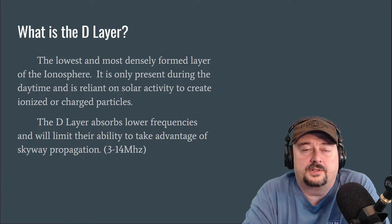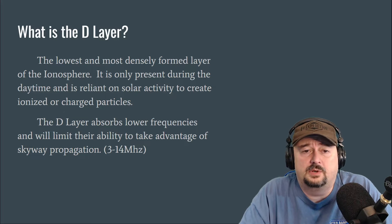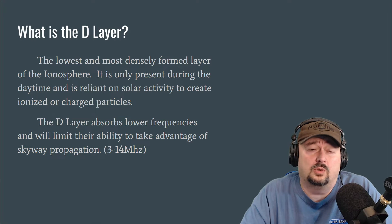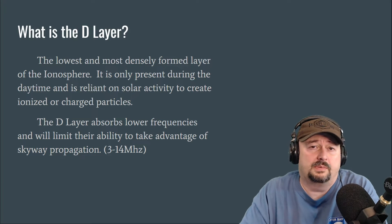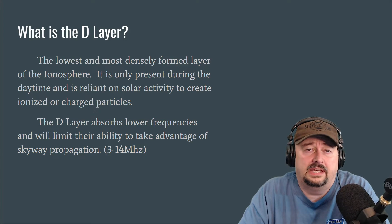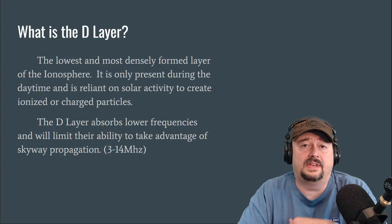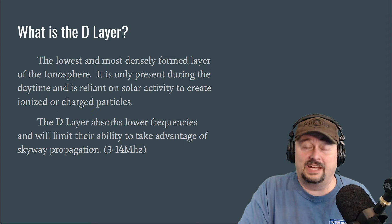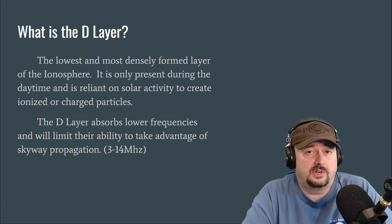The first thing somebody might ask is: what is the D-layer? It is the lowest and most densely formed layer of the ionosphere. It's only present during the daytime and is really reliant on solar activity to create ionized or charged particles. It's called the D-layer because they didn't want to call it A, B, or C in the event that the folks who discovered it would find another layer. So they started with D and worked their way up — just a little interesting tidbit of ham radio potpourri.